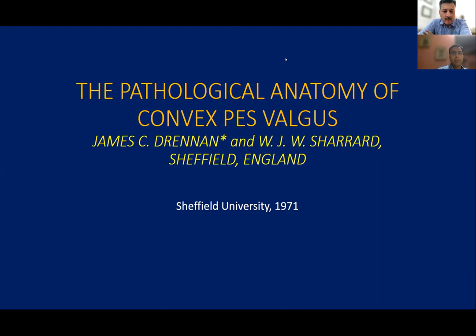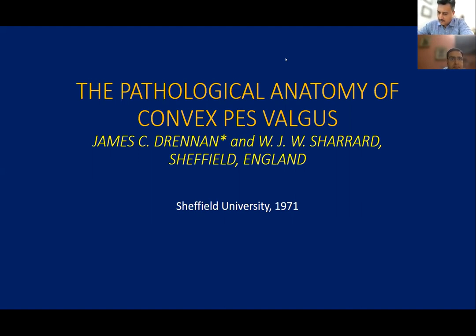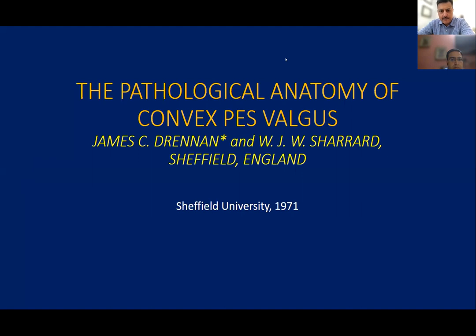It's an honor to be part of this journal club. This is a very nice study, but I think over the years the understanding evolved — it came to be seen more as a dorsal irreducible dislocation of the talonavicular joint secondary to muscle imbalance. The deformity was later thought to revolve more around that dorsal talonavicular dislocation. It's a very nice descriptive anatomy of contracted structures, and it's interesting to know that even back then they recognized that in convex pes valgus the equinus is at the ankle joint.